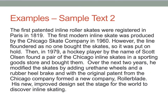Sample text two: 'The first patented inline roller skates were registered in Paris in 1819. The first modern inline skate was produced by the Chicago Skate Company in 1960. However, the line floundered as no one bought the skates, so it was put on hold. Then, in 1979, a hockey player by the name of Scott Olson found a pair of the Chicago inline skates in a sporting goods store and bought them. Over the next two years, he modified the skates by adding urethane wheels and a rubber heel brake and, with the original pattern from the Chicago Company, formed a new company: Rollerblade. His new improved design set the stage for the world to discover inline skating.'